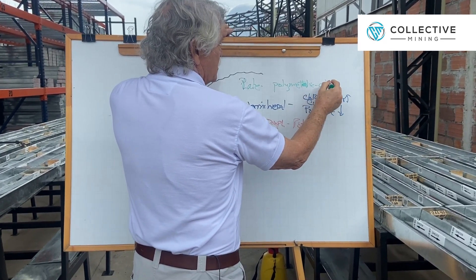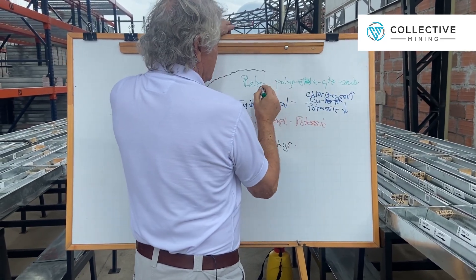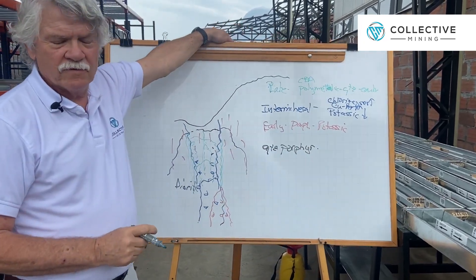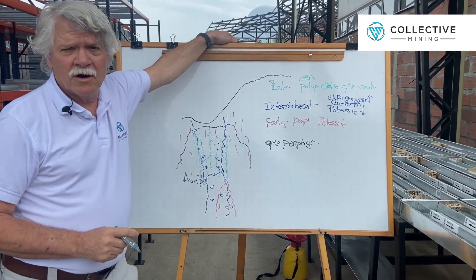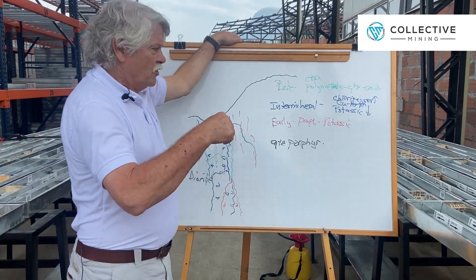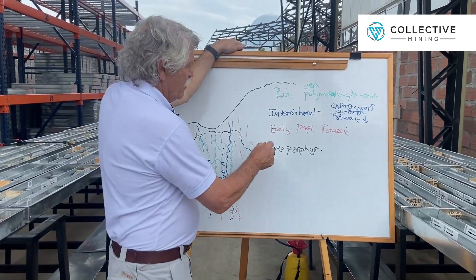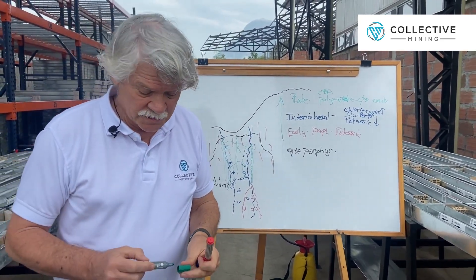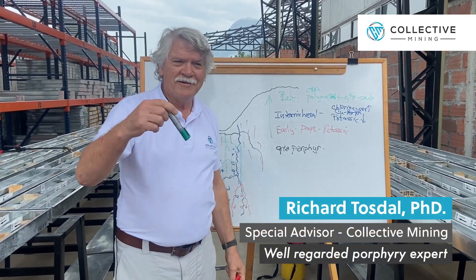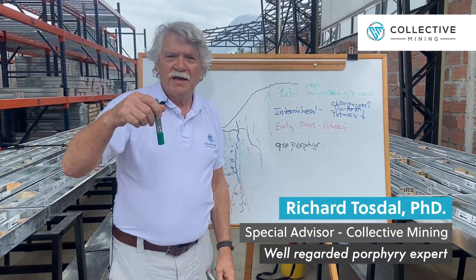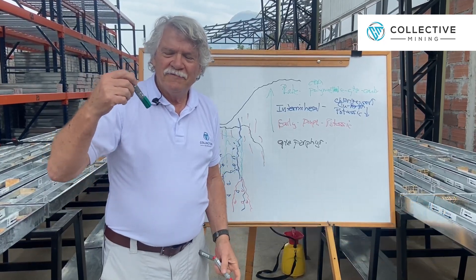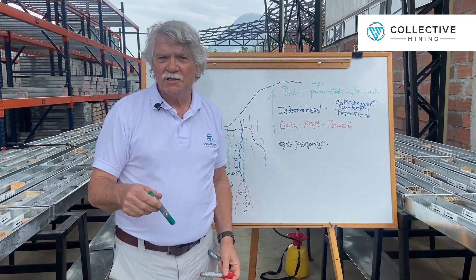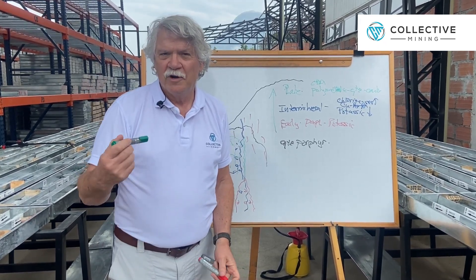These polymetallic quartz-carbonate veins — to make it easier in the logging process, they've taken to calling them the carbonate base metal veins, or CBM veins. For any porphyry geologist, they're going to recognize this as standard evolution in a porphyry copper system. So you have to look at Apollo not as a breccia, but as a porphyry copper deposit. The value, at this point in the exploration, seems to be associated with the intermineral stage of brecciation.